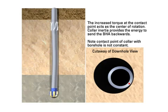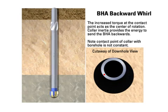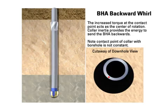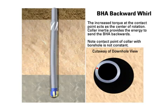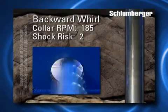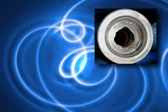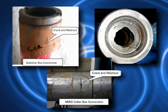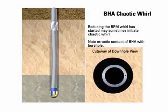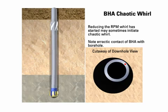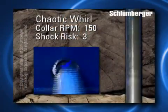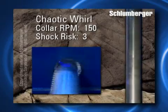Backward Whirl is very similar to Forward Whirl, except friction between the formation and BHA is greater. This increased friction results in increased torque on the BHA, which causes the BHA to rotate in the opposite direction of the rotation of the drill string. If whirling is backwards, then the collar connections can flex and fatigue at a very fast rate, resulting in accelerated fatigue cracking, washouts, and possible twist-offs. In Chaotic Whirl, there is no preferential side of the collars or BHA contacting the formation. The torque will be above average along with the lateral vibrations and shocks. Chaotic Whirl can occur when changing rotary RPM to try and address forward or backward whirl.